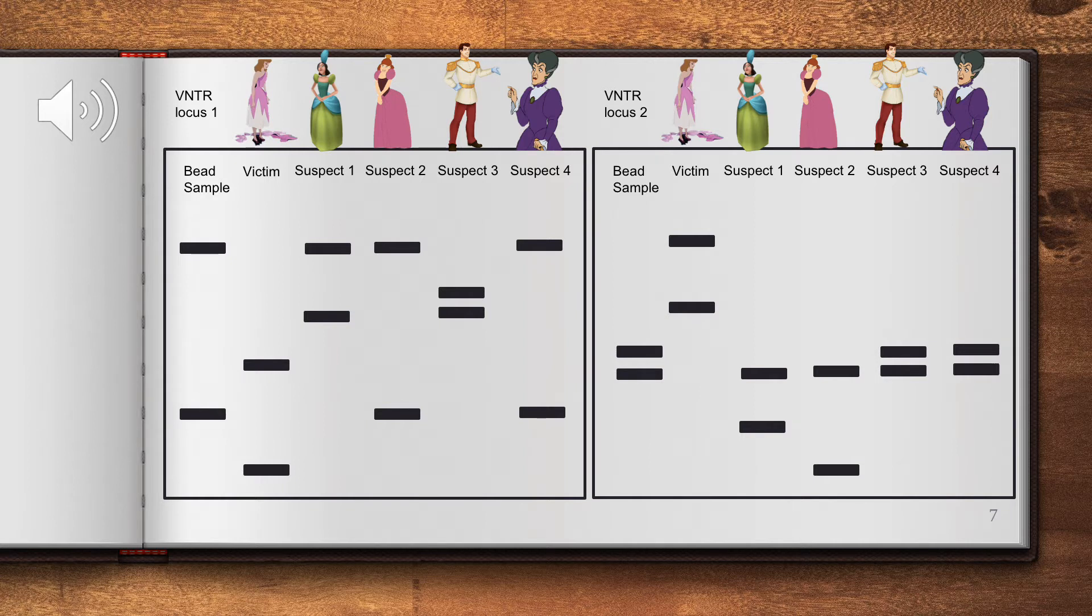Even though they know Cinderella didn't destroy her own dress, they wanted clear evidence to prove she is not the culprit. Looking at Locus 1 and Locus 2, neither of Cinderella's bands match the sample, thus she is not guilty.